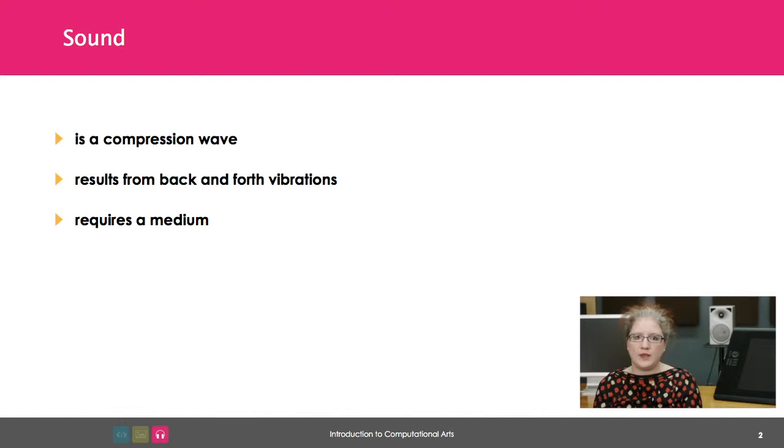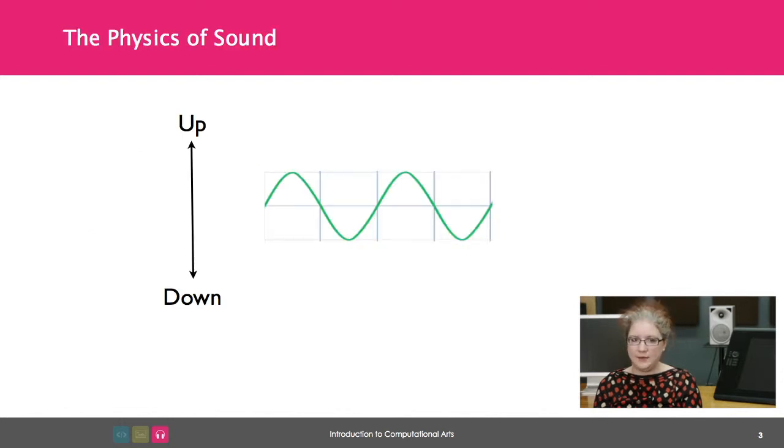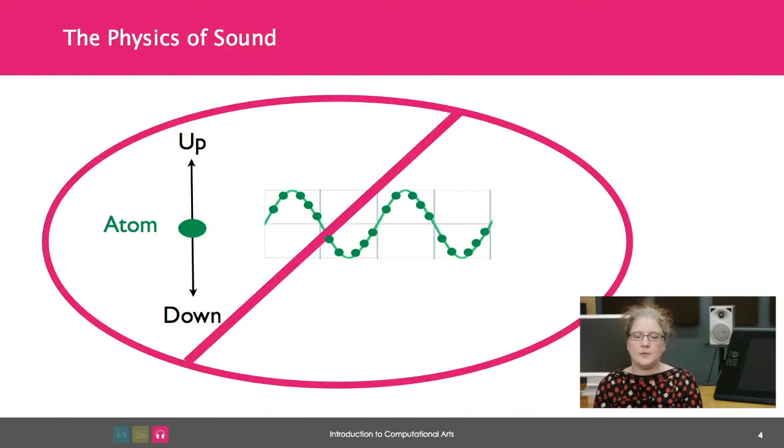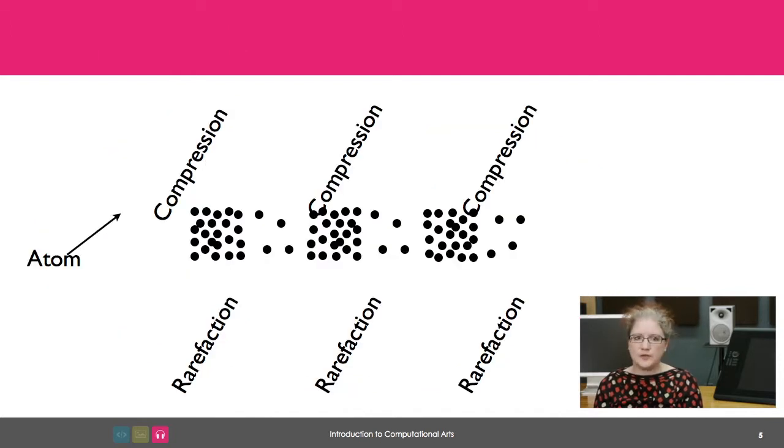Although we usually graph waves so it looks like they're going up and down, the graph is actually indicating the positive and negative pressure over time, not the movement of individual atoms. The atoms are bumping into each other, creating oscillations of high and low pressure.